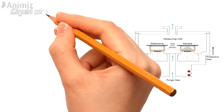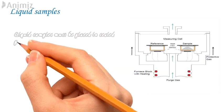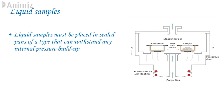7. Liquid Samples. Liquid samples must be placed in a sealed pan of a type that can withstand any internal pressure build-up. Do not overfill the pan or contaminate the sealing surface which will prevent sealing and cause surface leakage. When sealing a liquid, bring the die together gently to avoid splashing the sample.